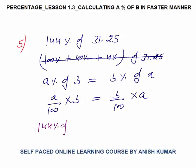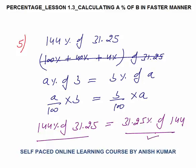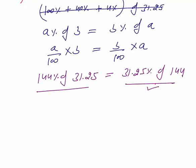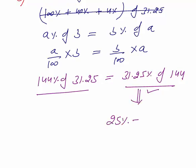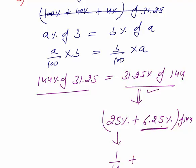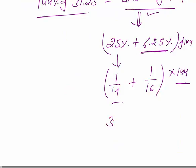It means that 144 percent of 31.25 is the same as 31.25 percent of 144. So rather than calculating the first, we will calculate 31.25 percent of 144 — this is easy to calculate. We can break it as 25 percent plus 6.25 percent of 144. Now 25 percent is one-fourth, and 6.25 percent is 1 by 16. So 1 by 4 into 144 would be 36, and 1 by 16 into 144 is 9. So 36 plus 9, the answer would be 45.